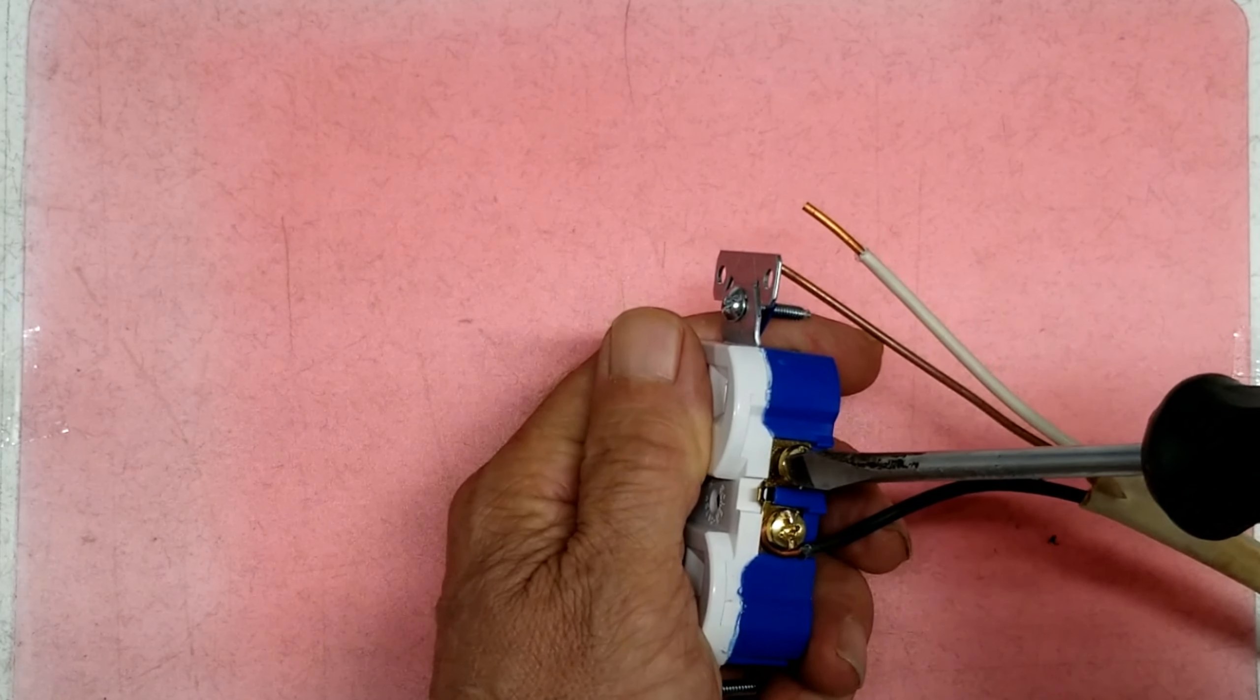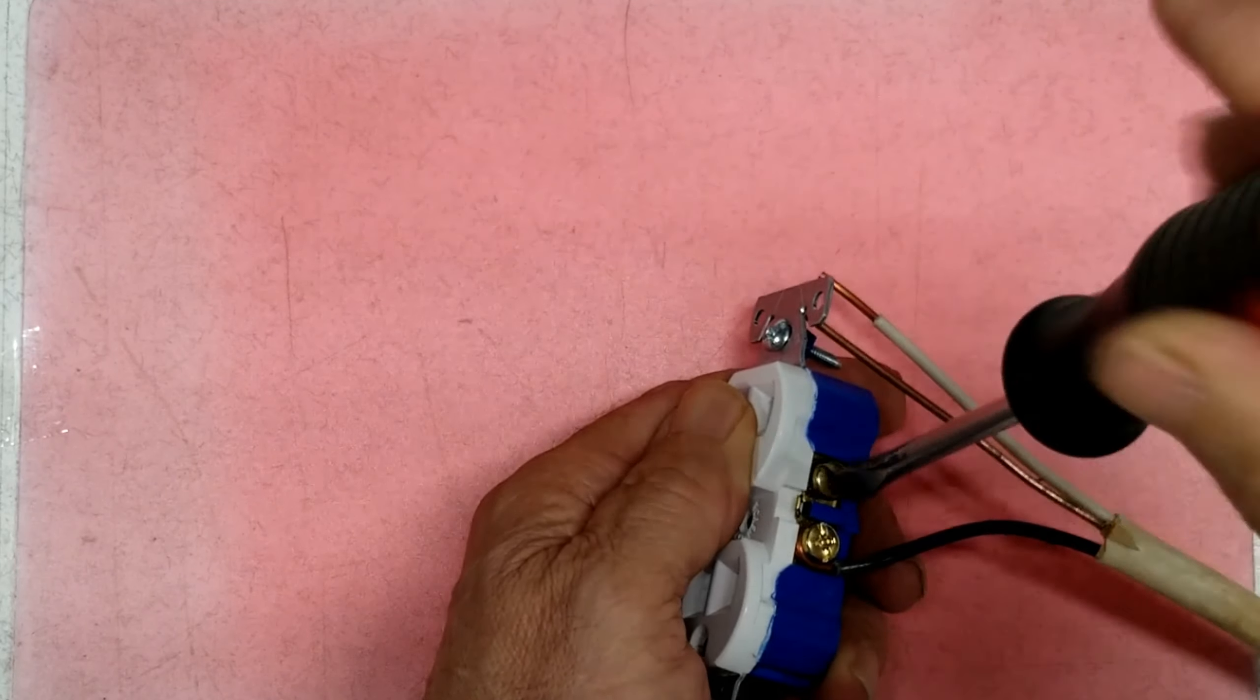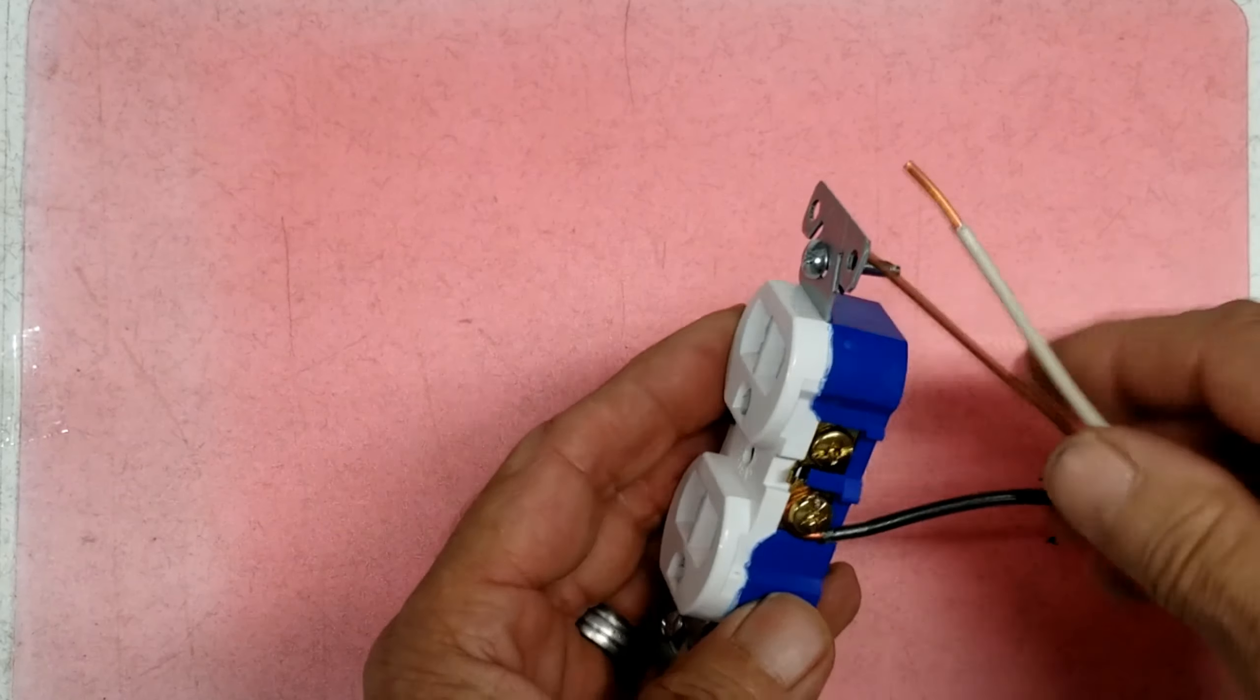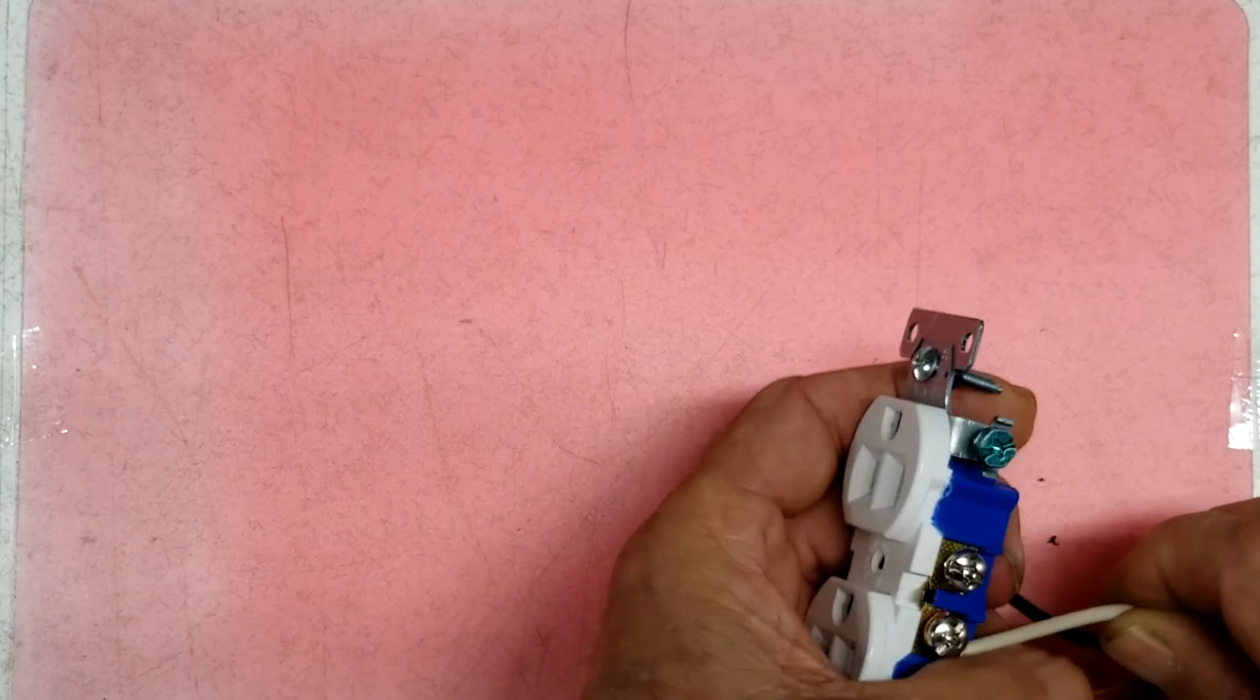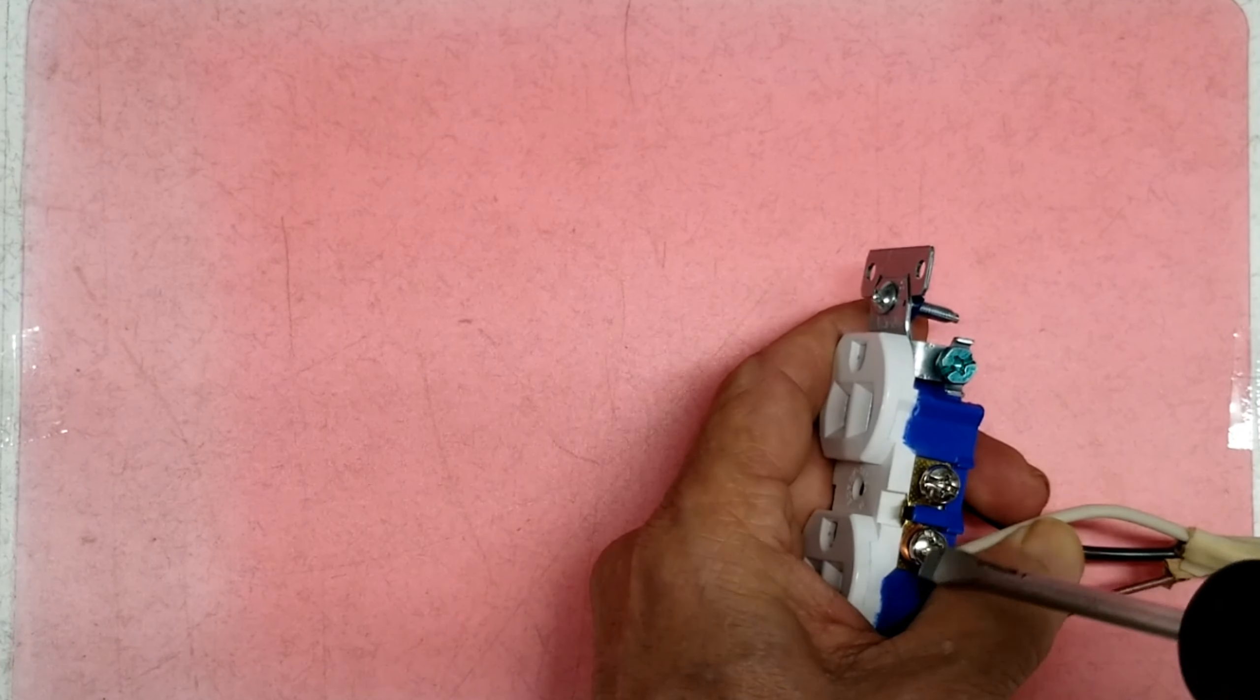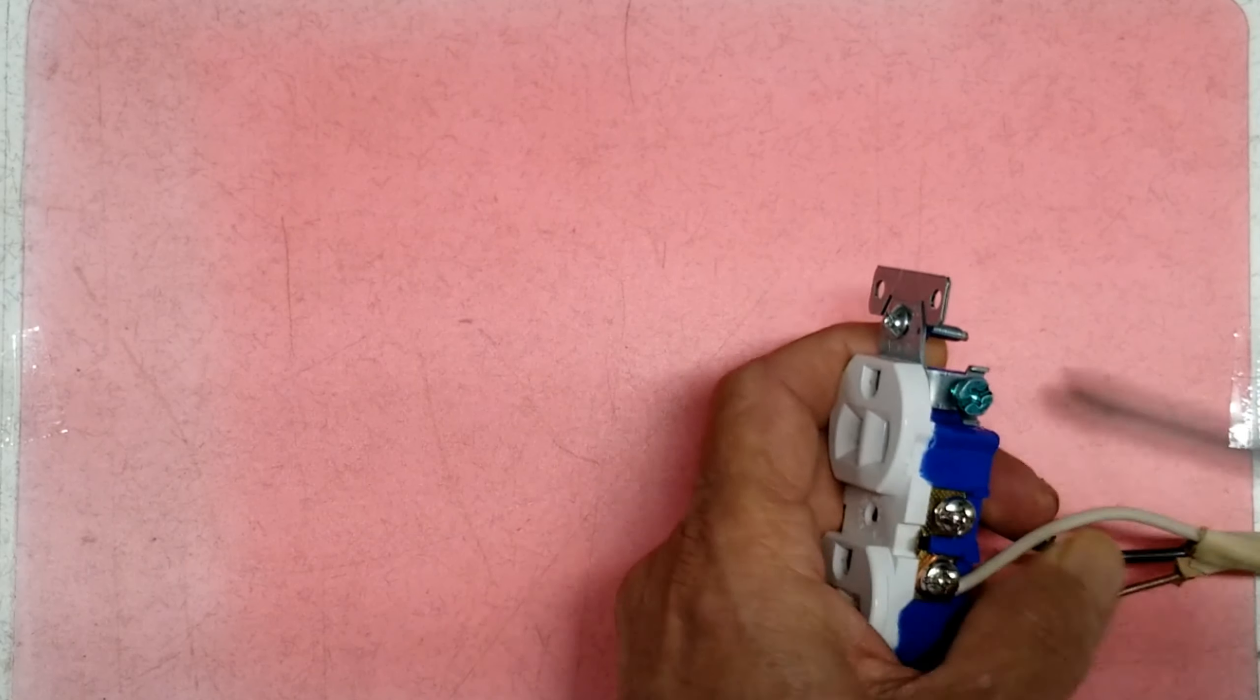And the screw that you're not using, just run it in, snug it a little bit, so it can't get into a box or another wire. And we come over here to the neutral. We do the same thing with it. Kind of give it a little fish hook. Come over here and slide it down on that one, on your neutral, the silver. Silver is always neutral. White wire is always neutral.